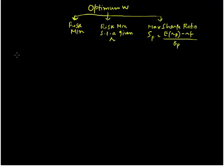For this, we will continue to work with the Sharpe ratio, though we could also arrive at the same result by maximizing the investor utility function, which I am going to leave to you for your own practice. We could also arrive at the same result by minimizing risk subject to a given level of return, for which you can watch my three videos on the global minimum variance.